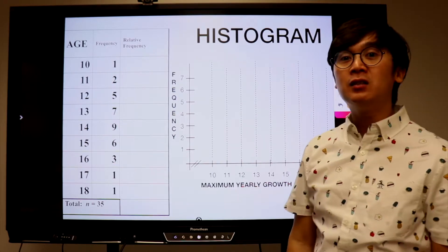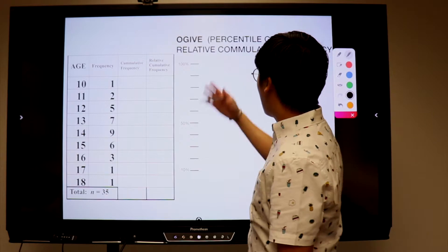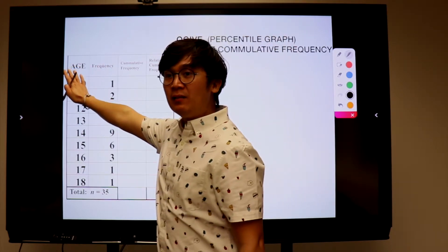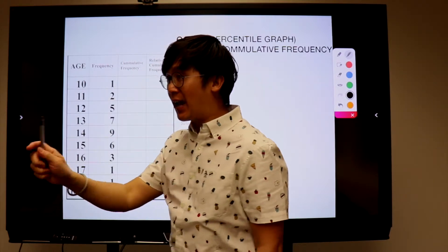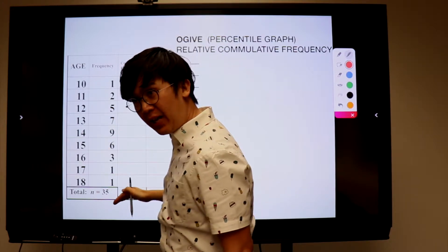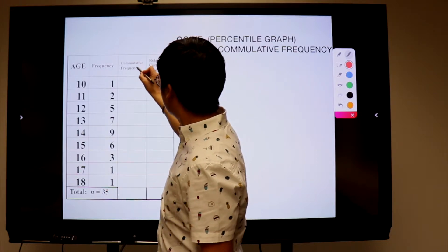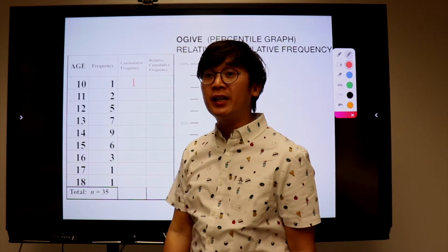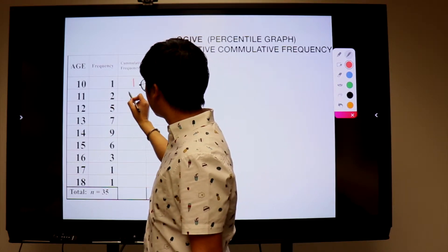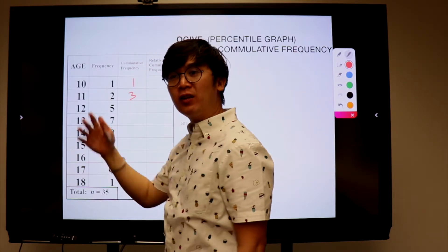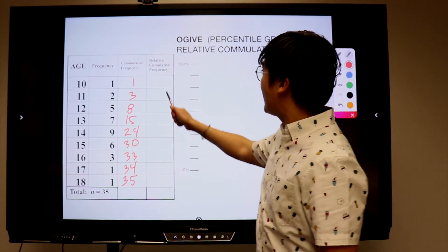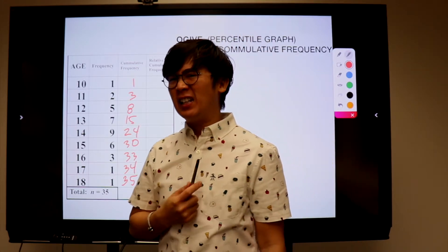Let's move on to our second level of statistical graph, which is an ogive. In an ogive, we're going to compute the cumulative frequency and then the relative cumulative frequency. We still have our age data set and the frequency, and now we're going to produce the cumulative frequency. The cumulative frequency is basically the sum of each of your data sets from the top going to the bottom. Your first number is your first data set, then you add it to the second row — 1 plus 2 is 3 — and continue until you reach 35.